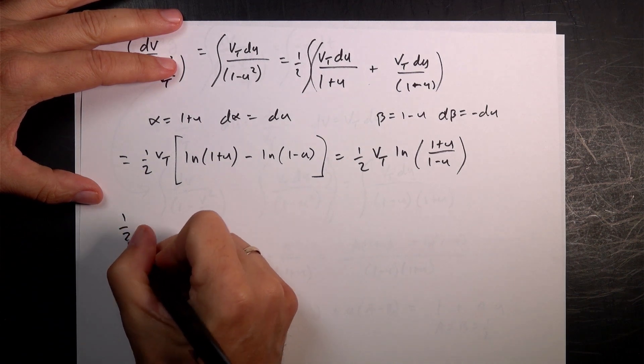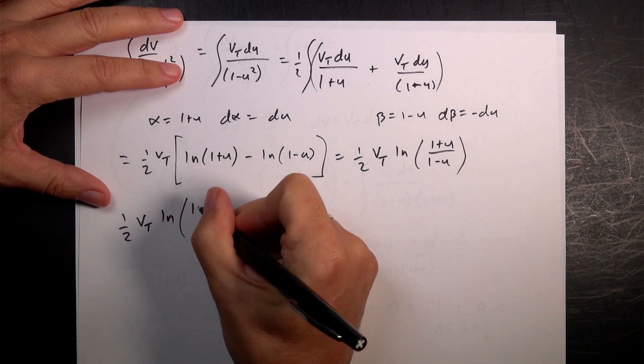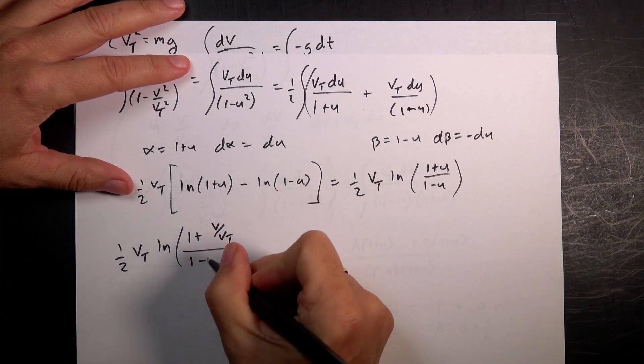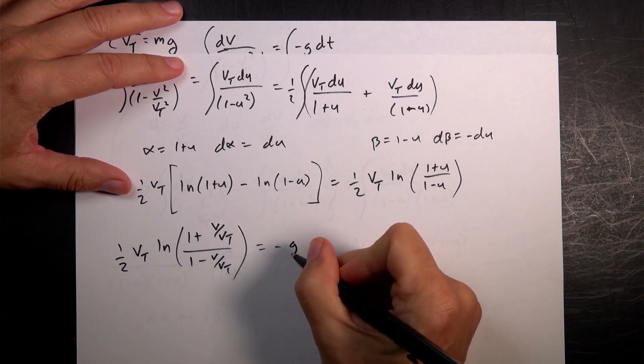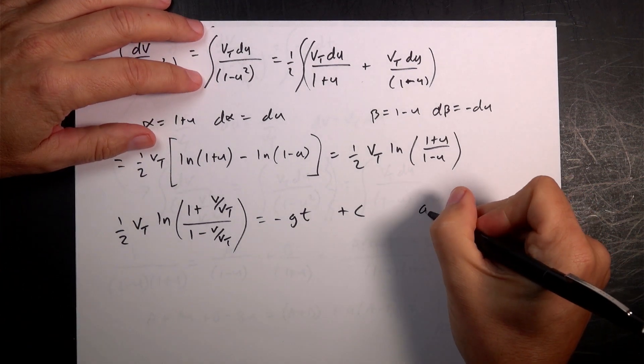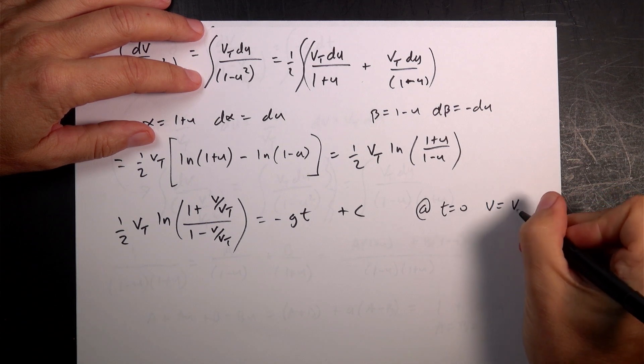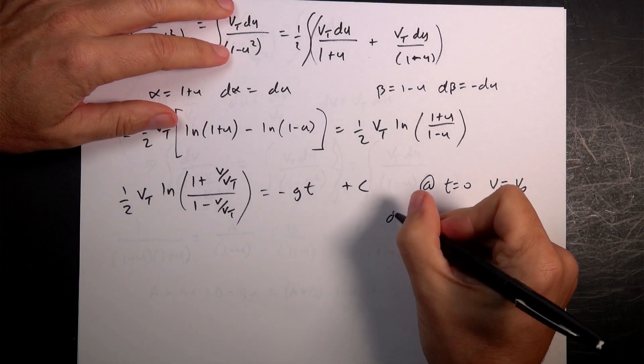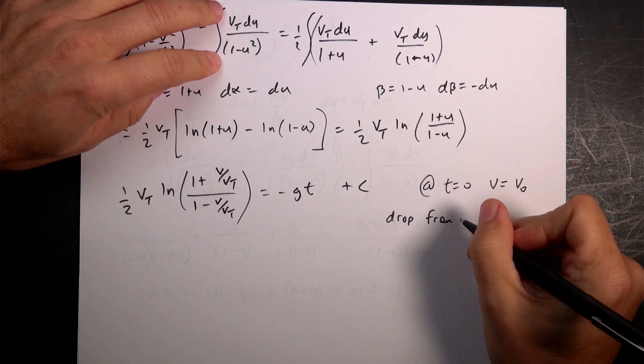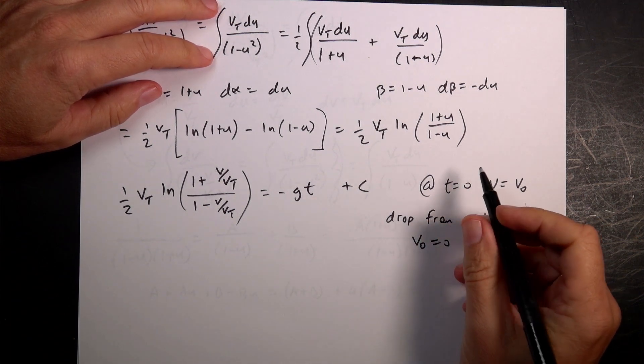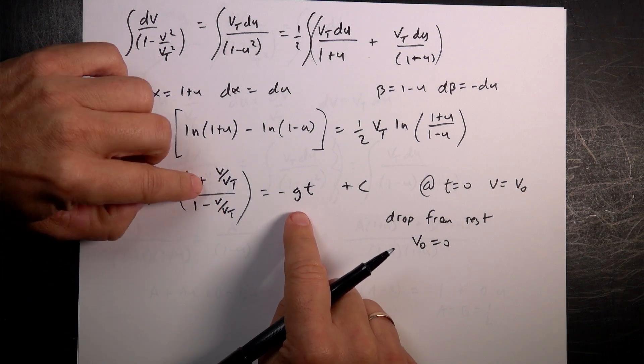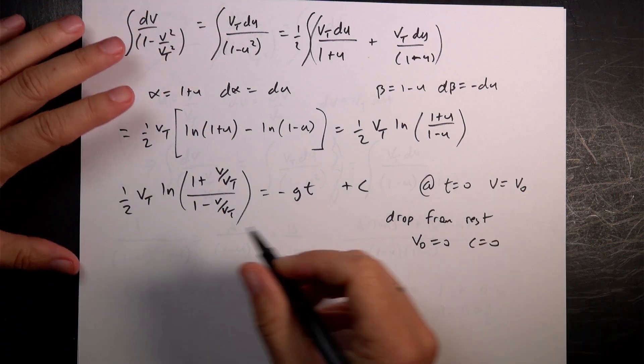So putting that all together, I get 1 half vt ln, 1 plus u, which is v over vt, 1 plus v over vt, over 1 minus v over vt, equals negative gt plus c. So now, at t equals 0, v equals v0. This is the initial velocity. It can get messy. Okay. So let's just say I drop it from rest. For this case, I want to just drop it from rest because the math gets really bad. So drop from rest. v0 equals 0. So when I put in t equals 0, this is 0. And that's 0. No. So I get 0. I get 0. So I get 0 on both sides. So c is equal to 0.